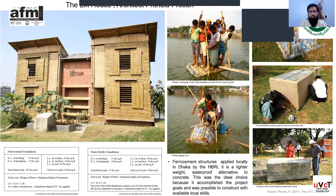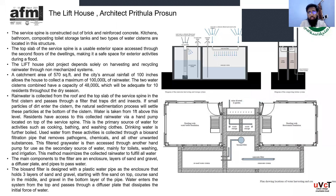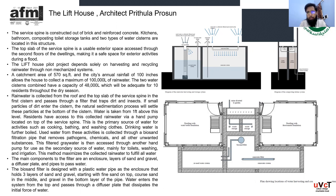Two types of foundations were tested: ferro cement and a water-body-based foundation. The ferro cement foundation proved superior due to fluctuations in density in the water-body foundation. To make the house self-sustainable for water, rainwater is collected and filtered through a natural filtration process. The filtered water is stored in a tank in the fixed service line, then pumped up to the first floor for drinking and domestic use.